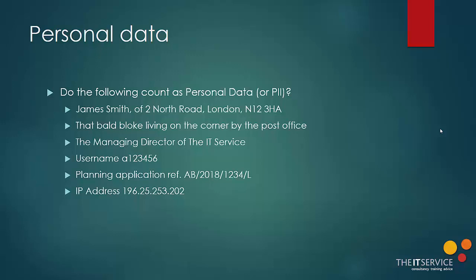Think of a council publishing a planning application on its portal. We have an application reference here: AB/2018/1234/L. Would that be personal data? Absolutely. If you were to go to the planning portal for the council and type in the reference number, you can find out who made that planning application. In fact, in 2017, one of the councils in the UK got into a lot of trouble for publishing information relating to a planning application that included information about disabilities of the children in the family, which was part of the justification for the planning application. Normally the council would have redacted that information, but on this occasion it slipped through the net, and the council was initially fined £150,000, although it was later reduced to £70,000 on appeal.